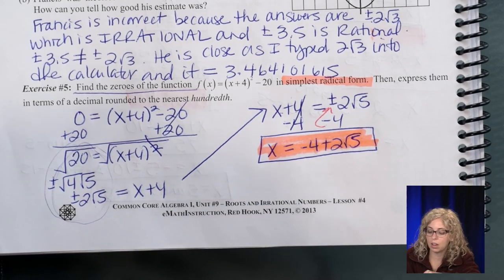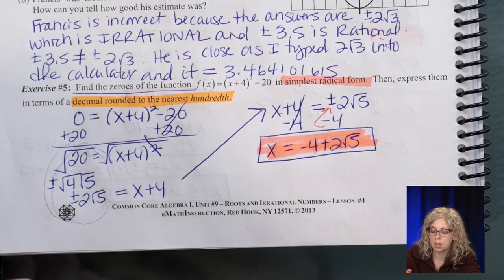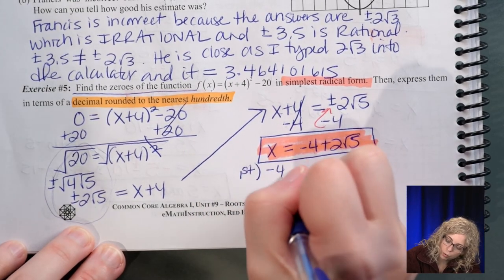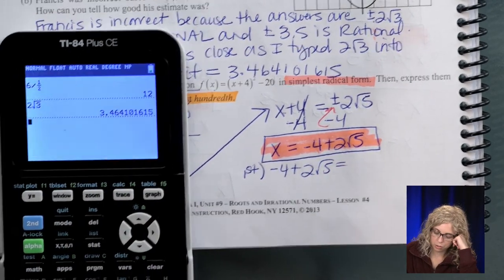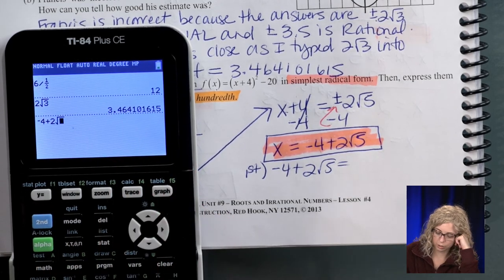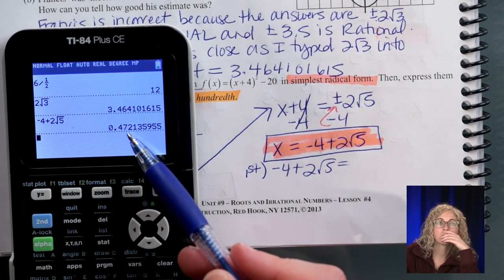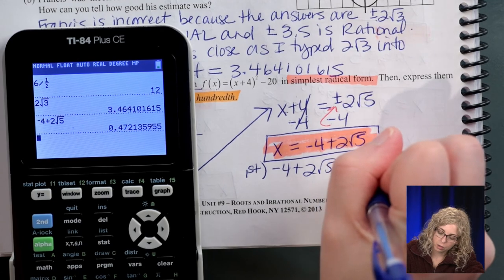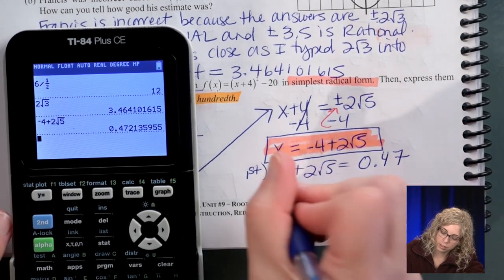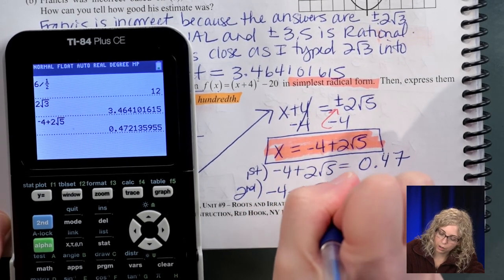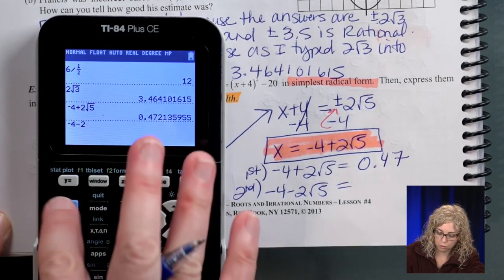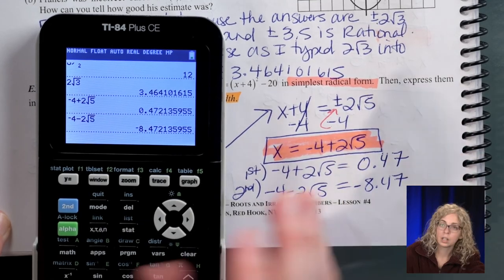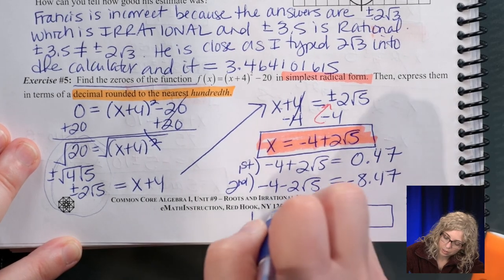Now, I have to provide the other type of answer, which is a decimal rounded to the nearest hundredth. So, on the calculator, so, the first one, because there's two answers. So, first, we have negative 4 plus 2 radical 5. Hundredth is two decimal places. So, negative 4 plus 2 radical 5. So, we look. There's the 7 there. To the right is a 2. In order to bump the 7 to an 8, it has to be, the number to the right has to be 5 or higher. So, this answer is equal to 0.47. And then, the second answer is negative 4 minus 2 radical 5. So, negative 4 minus 2 radical 5. Which is negative 8.47. So, the two answers is radical form or decimal form.